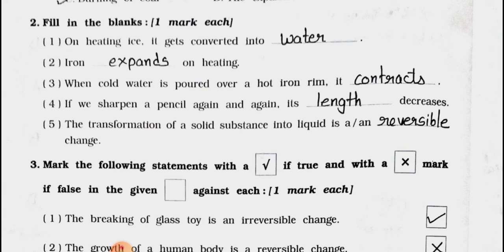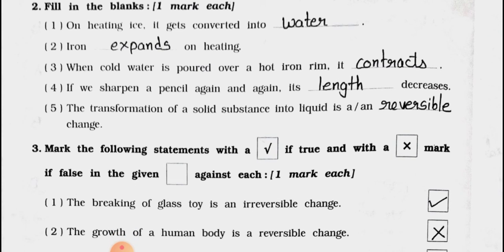Now see main two, fill in the blanks, one mark each. Number 1: On heating ice, it gets converted into water. Number 2: Iron expands on heating.